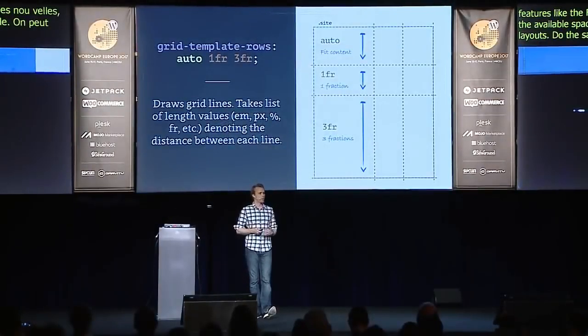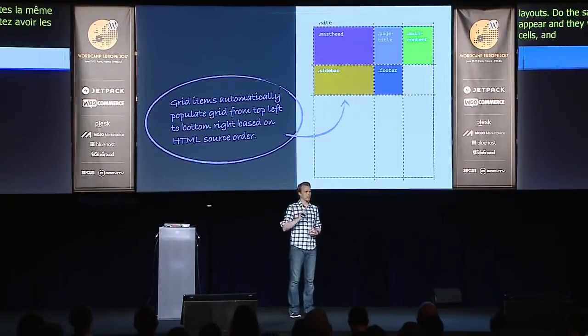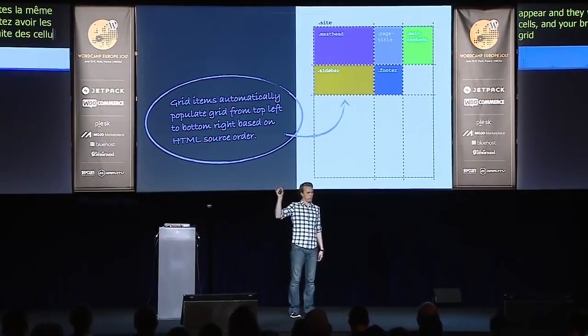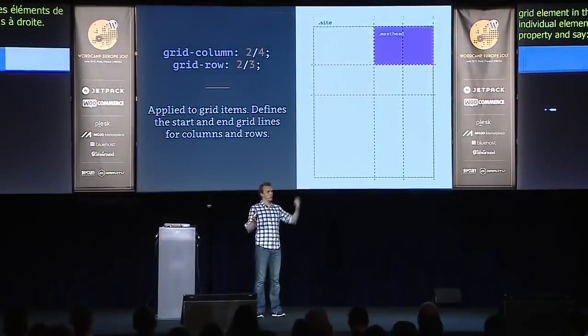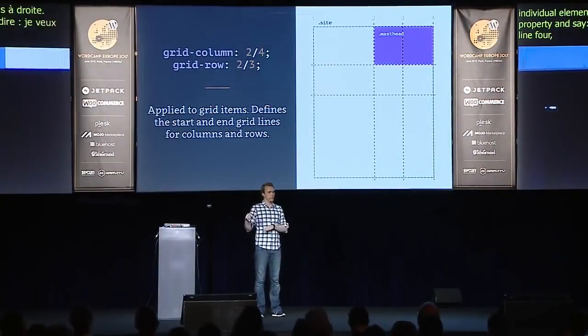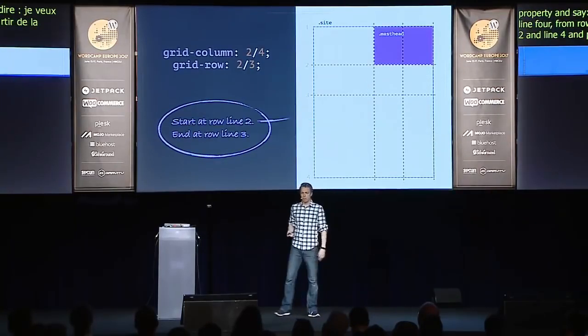This comes with new features like the FR, or fraction value, that allows you to say: take one fraction of the available space and put a line there. So you can make truly dynamic layouts. Do the same with rows — you just declare a list of where you want the rows to appear, and they will appear automatically. Once you've drawn rows, you have cells, and your browser automatically places all the direct descendants in those cells from top-left to bottom-right. Then, for each individual element, you can declare grid-column and grid-row properties and say: I want this element to appear from column line 2 to column line 4, and from row line 2 to row line 3. You literally find those column lines and put the content between them. Same with rows.